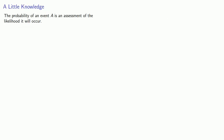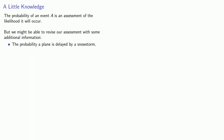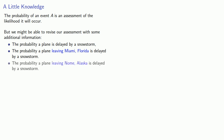The basic idea is the following. The probability of an event A is an assessment of the likelihood it will occur. But we might be able to revise our assessment with some additional information. For example, we might consider the probability that a plane is delayed by a snowstorm. But we might also consider the probability that a plane leaving Miami, Florida is delayed by a snowstorm, or the probability a plane leaving Nome, Alaska is delayed by a snowstorm.